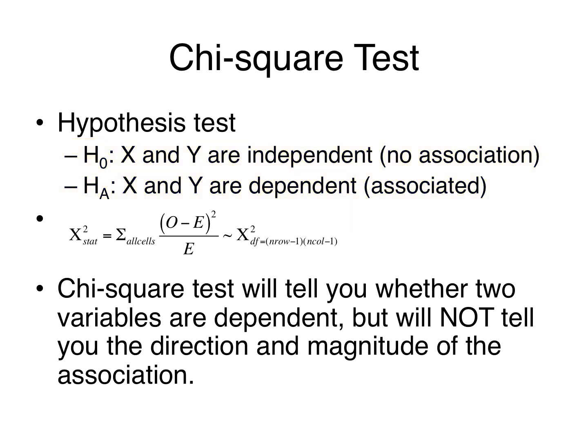The alternative hypothesis is that the explanatory and outcome variables are dependent, that x and y are associated. As usual, we start by assuming that the null hypothesis is true and then work out a probability that tells us how likely we were to observe what we did in our sample, or something more extreme, given that the null hypothesis really is true. So we want to know how different what we observed is from what we would expect if the two variables really were independent.